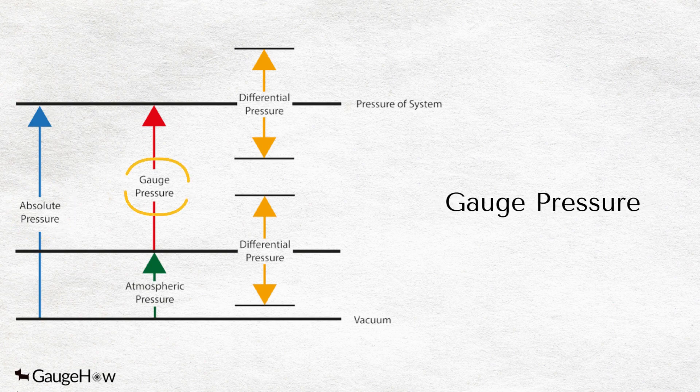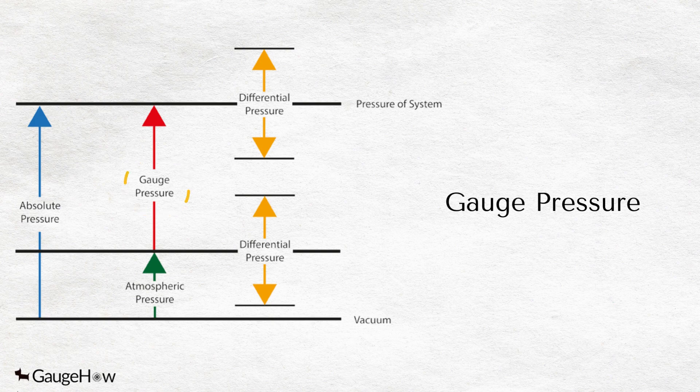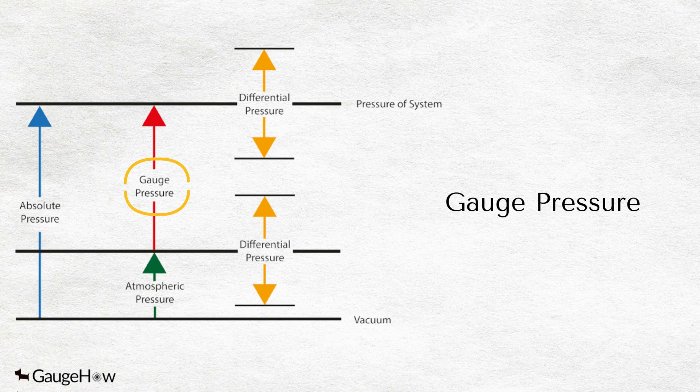Gauge pressure is the pressure relative to the atmospheric pressure. This form of pressure is positive when it is above atmospheric pressure and negative when it is below atmospheric pressure.